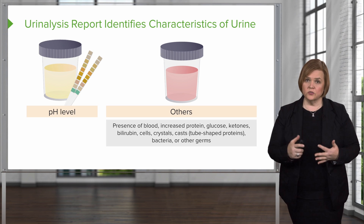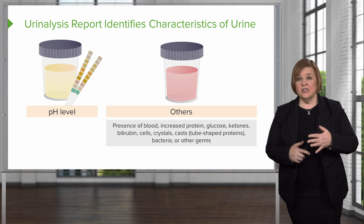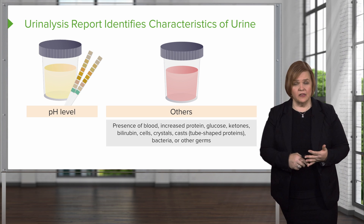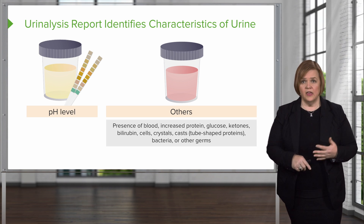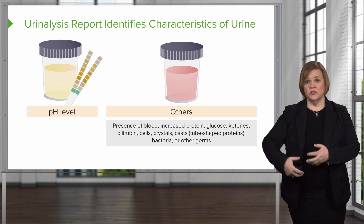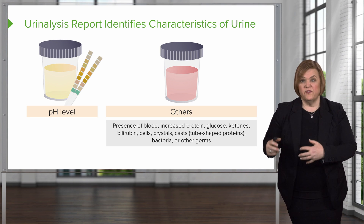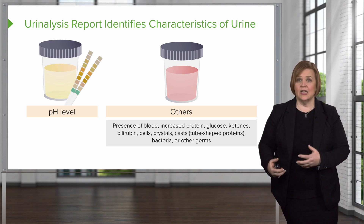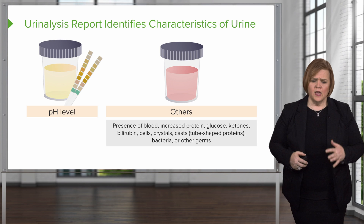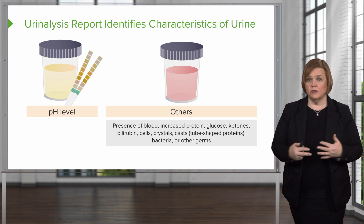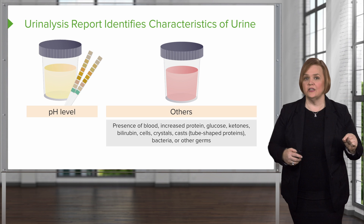If blood sugar is really high, we can end up with extra glucose in the urine. Ketones are something we look for in a diabetic patient — you've probably heard of diabetic ketoacidosis. That's when a diabetic client can't get their energy in the form of glucose into their cells, so their body goes after fat as a source of energy. One of the waste products of breaking down fat is ketones. There are also some extreme low-carb keto diets that can cause ketones in the urine.